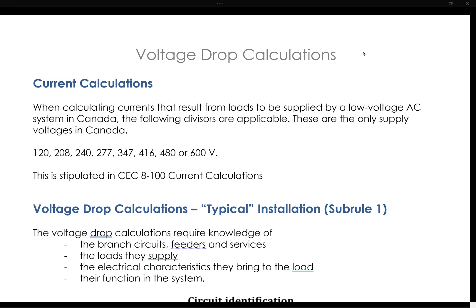So the Canadian Electrical Code Section 8, Rule 102 provides a guideline for calculating the voltage drop appropriately. And before that, Rule 100 in Section 8 just reminds us that when we're calculating the currents that result from these loads, we have to remember our supply voltages that are available in Canada, which are listed here. These are all available, some more common than others, but these will be our divisors when we are doing our voltage drop calculations.